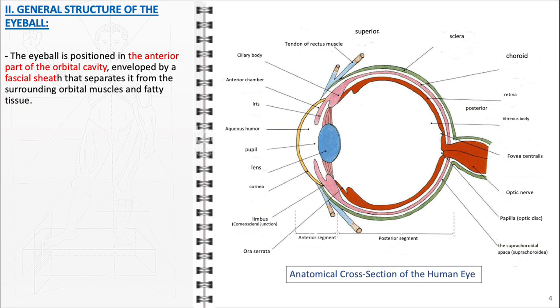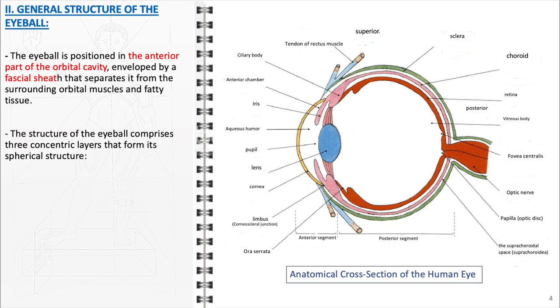Now let's delve into the details of the eye's general structure. The eyeball is positioned in the anterior part of the orbital cavity, enveloped by a fascial sheath that delineates it from the surrounding orbital muscles and fatty tissue, ensuring stable placement and movement. The structure of the eyeball comprises three concentric layers that form its spherical structure, each enclosing a cavity.